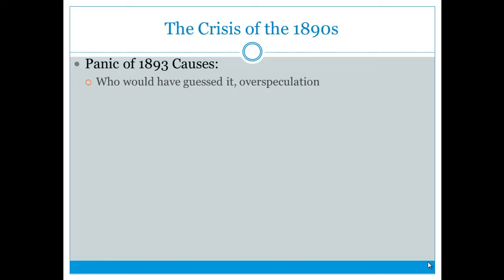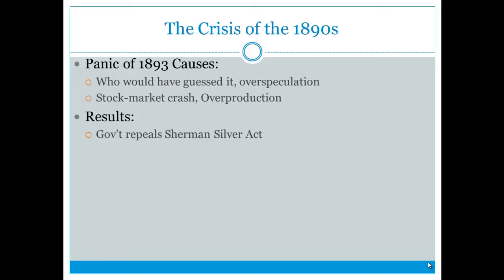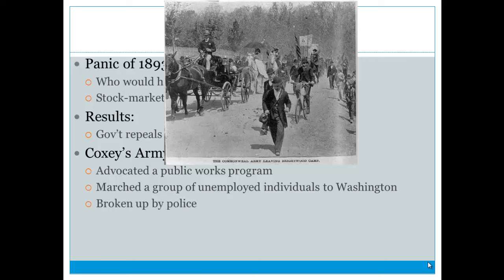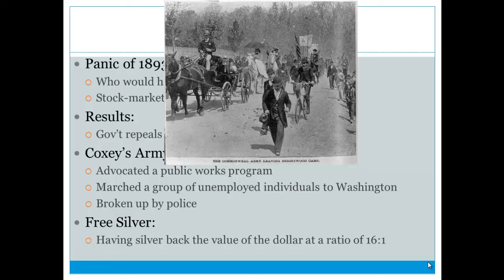In 1893 there was a panic caused by over-speculation, a stock market crash, and overproduction. The government repealed the Sherman Silver Act, making silver no longer used to back currency. A group called Coxey's Army — poor people protesting government policies — marched to Washington D.C. advocating a public works program to reduce unemployment, but they were broken up by police. Free silver — the 16 to 1 ratio — was still pushed as a way to increase money supply and help debtors pay off debts.